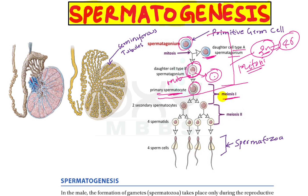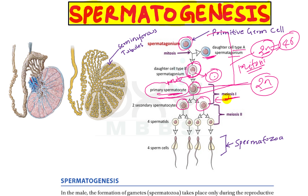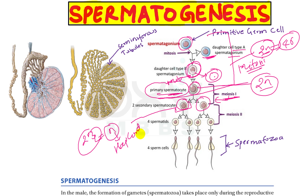In the primary spermatocyte, the first meiotic division takes place. Because meiosis is a reduction division, the primary spermatocyte (2n) is converted into secondary spermatocytes with only n chromosomes — that is, 23 chromosomes — making them haploid cells.